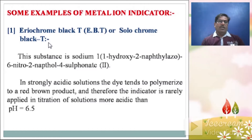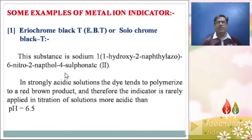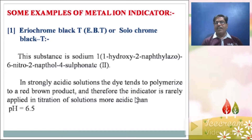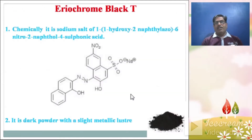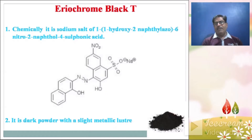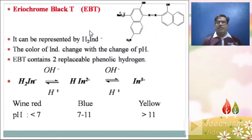EBT, also known as Eriochrome Black T or Solochrome Black T, is sodium 1-(1-hydroxy-2-naphthylazo)-6-nitro-2-naphthyl-4-sulfonate. In strongly acidic solution, the dye tends to polymerize to a red-brown product, and therefore the indicator is rarely applied in titrations of solutions more acidic than pH 6.5. It is a dark powder with slight metallic luster, containing a 2-naphthylazo group.